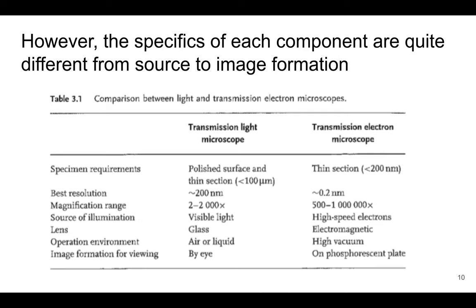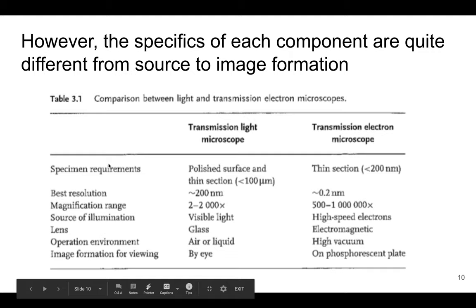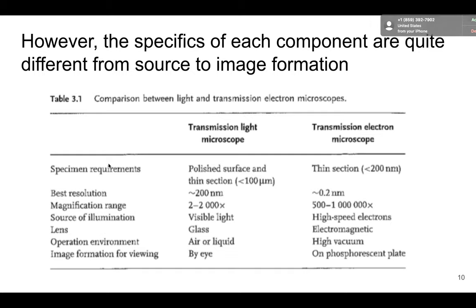But again, the components are quite different, as you would imagine. So starting with the requirements that we have of the specimen. We typically, for transmission light microscopy, we typically want a thin section, but we're talking thin as in less than 100 microns. Here for TEM, we need less than 200 nanometers, and so the specimen preparation is a lot more difficult.